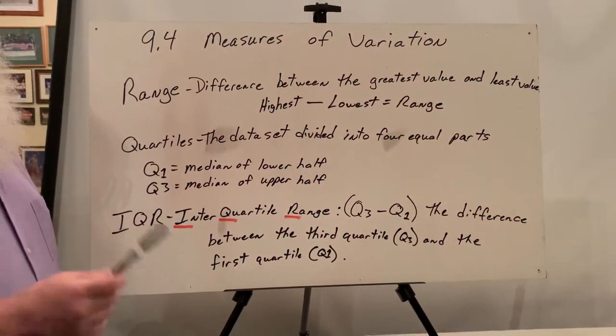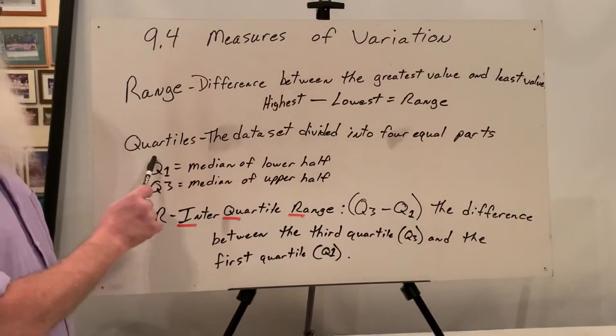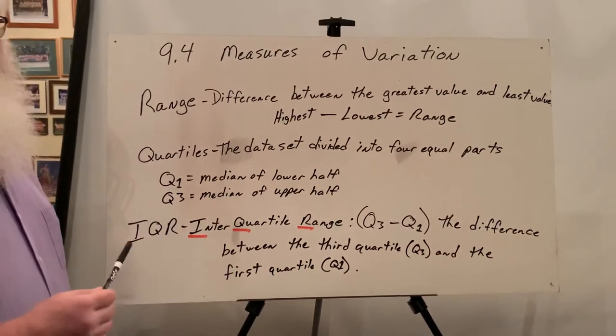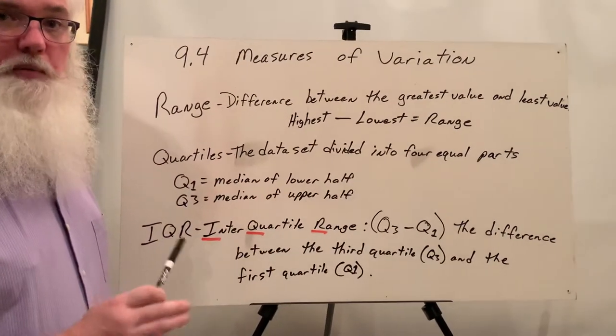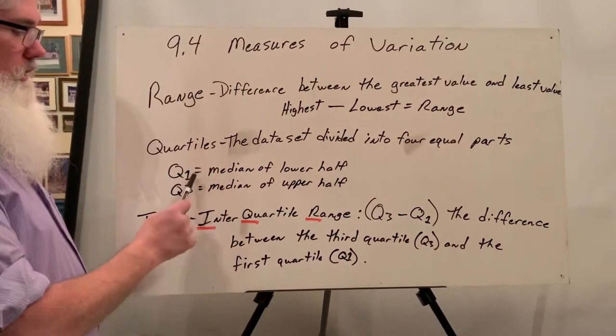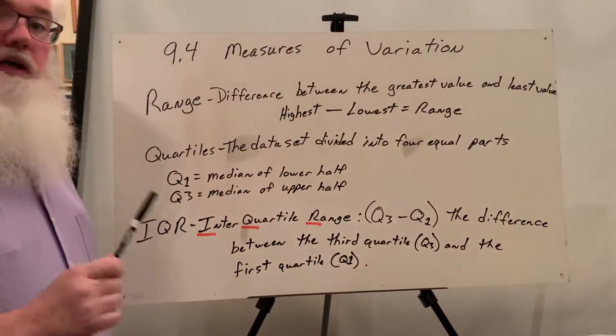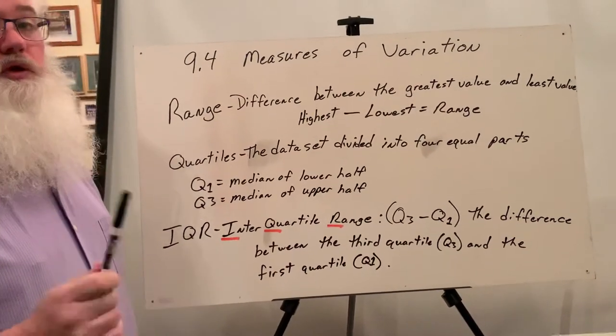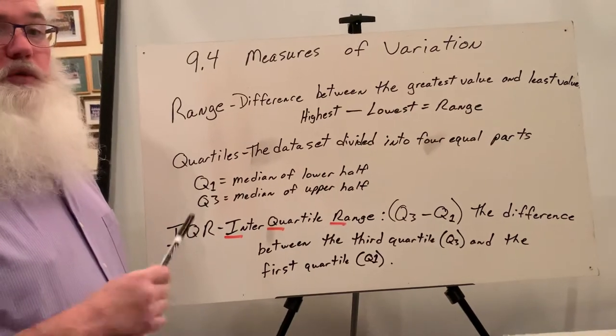Our next item, and this one's really important to understand, are what quartiles are. Quartiles are simply taking the data set and dividing it into four equal parts. The important ones are Q1 and Q3. Now, oddly enough, you already know what Q2 is. Q2 is actually the median.